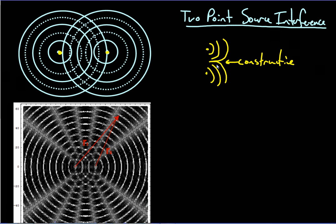In other scenarios you'll have crests meeting troughs, and that is going to give you destructive interference.